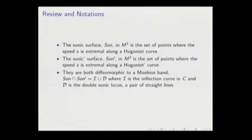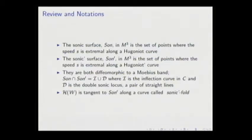D is a pair of straight lines — the double sonic. The Hugoniot curve which is tangent to sonic prime along the curve is colored sonic prime fold. This is an important curve in our decomposition.